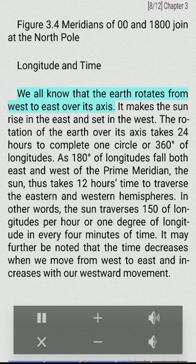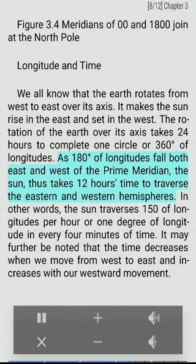Longitude and time: We all know that the earth rotates from west to east over its axis. It makes the sun rise in the east and set in the west. The rotation of the earth over its axis takes 24 hours to complete one circle or 360 degrees of longitudes. As 180 degrees of longitudes fall both east and west of the prime meridian, the sun thus takes 12 hours time to traverse the eastern and western hemispheres. In other words, the sun traverses 15 degrees of longitudes per hour or one degree of longitude in every four minutes of time. It may further be noted that the time decreases when we move from west to east and increases with our westward movement.